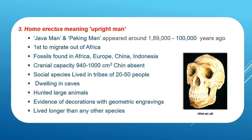Homo erectus, meaning 'upright man,' appeared around 1.89 million years ago and was the first in the human lineage to migrate out of Africa. Their fossils have been found in Africa, Europe, China, and Indonesia. They had a larger cranial capacity, were social, lived in tribes and caves, and hunted large animals. It is notable that Homo erectus lived longer than any other species of Homo.